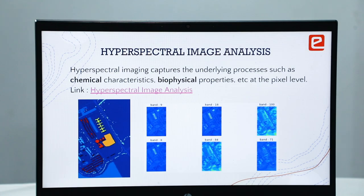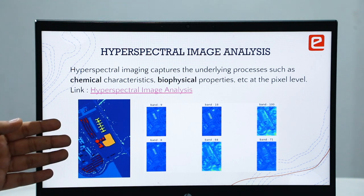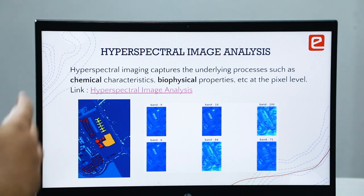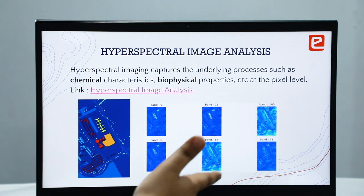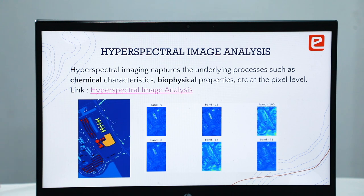In hyperspectral image analysis, there can be hundreds of bands. Here we are using multiple bands and segregating each one — such as band 9, band 18, band 100, band 8, and so on. This is useful for assessing the chemical characteristics and biophysical properties at a fine level.